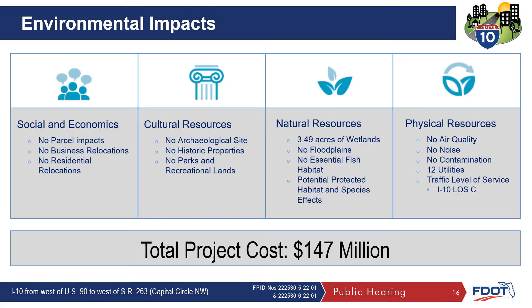An important element of this PD&E study was to evaluate the potential project impacts and benefits. A wide range of environmental resources were evaluated including various social, cultural, natural, and physical features. Engineering and traffic factors were also considered. This slide illustrates the impacts for the preferred alternative. There are no anticipated impacts to social, economic, and cultural resources. For natural resources, there are 3.49 acres of wetlands, no floodplain impacts, and no anticipated impacts to endangered and threatened species. For physical resources: no air quality impacts, no noise impacts, no contaminated sites, 12 utilities, and traffic LOS C. The total project cost is $147 million.